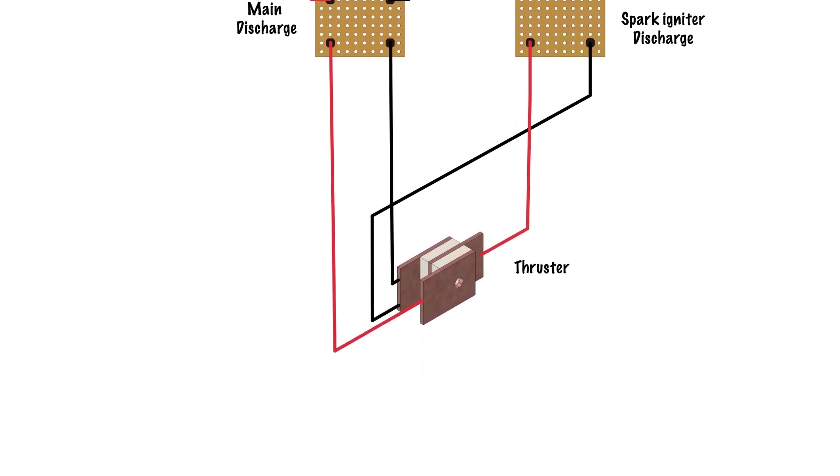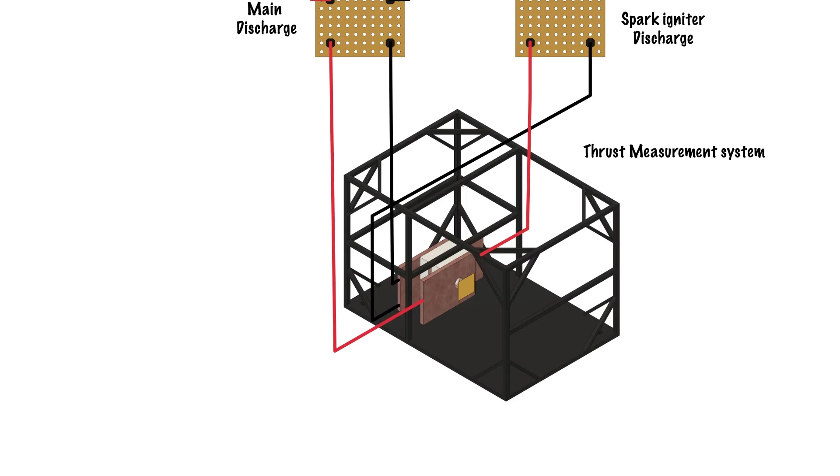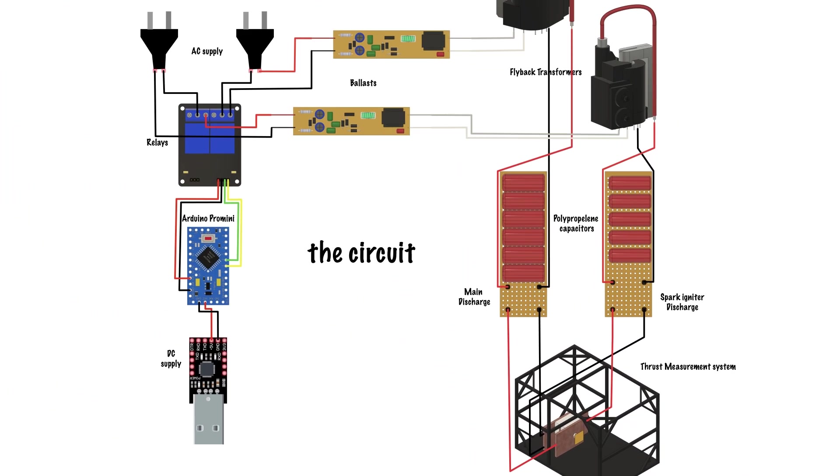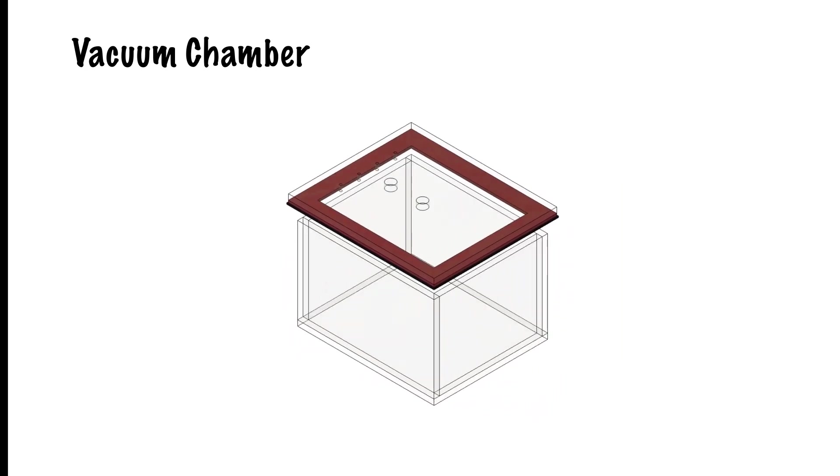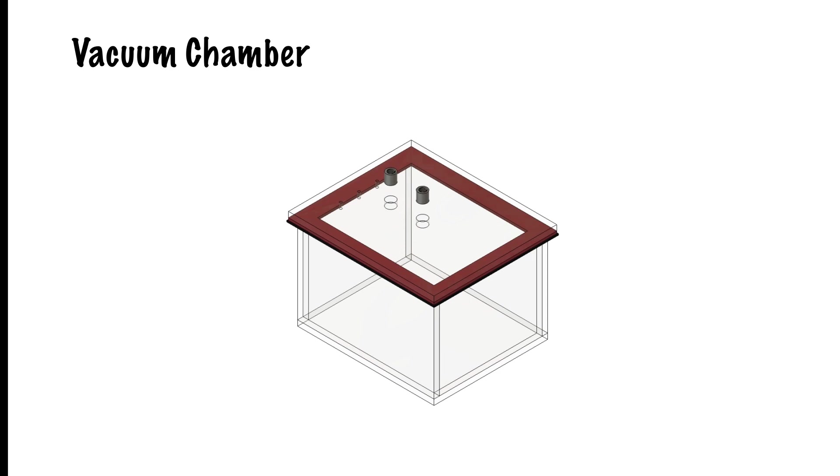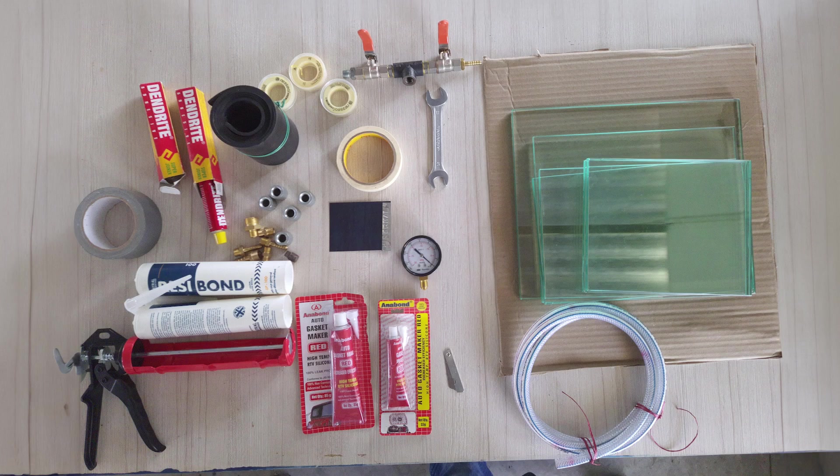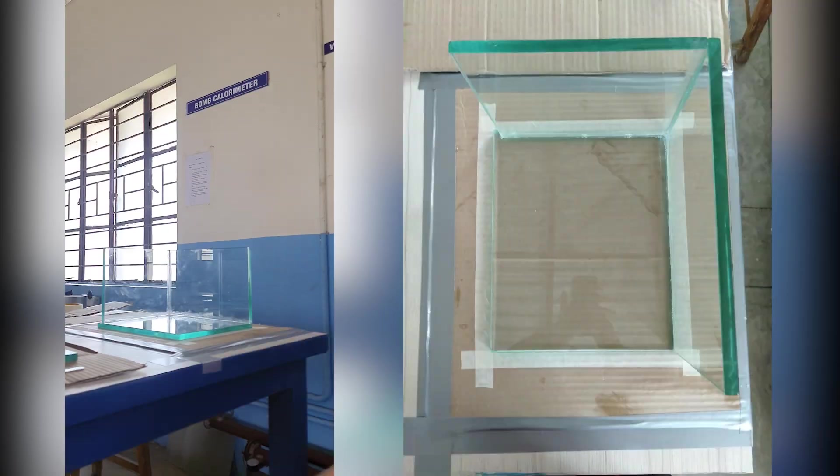While we were working on the thruster, we had simultaneous work going on the vacuum chamber as well. So, we designed a vacuum chamber, not too big, not too small. It has a volume of 15,000 cubic centimeters. It is equipped with valves for connecting to a vacuum pump and a vacuum gauge to monitor the internal pressure. Additionally, it features electrical feed-throughs for supplying voltage within the chamber. After getting everything required to make one, we started working on the chamber.